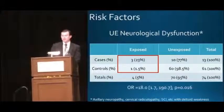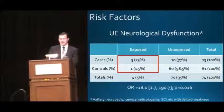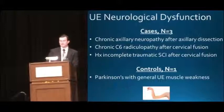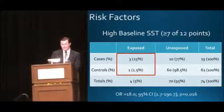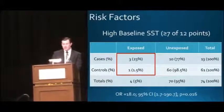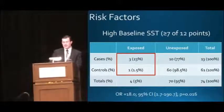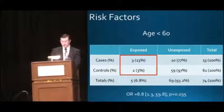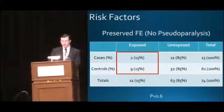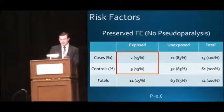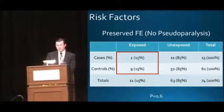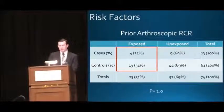With upper extremity neurological dysfunction and deltoid weakness, there was 18 times increased odds for poor functional improvement. Patients with this risk factor were identified by both history and a corroborating physical exam. With high baseline SST score, there was also 18 times increased odds for poor functional improvement. With young age, there was about nine times increased risk for poor functional improvement. Previously, our group and others have reported that lack of pseudoparalysis was a risk factor for poor improvement after this operation, but in this study lack of pseudoparalysis was not associated with poor functional improvement. Also of note, prior arthroscopic rotator cuff repair was not associated with poor functional improvement.